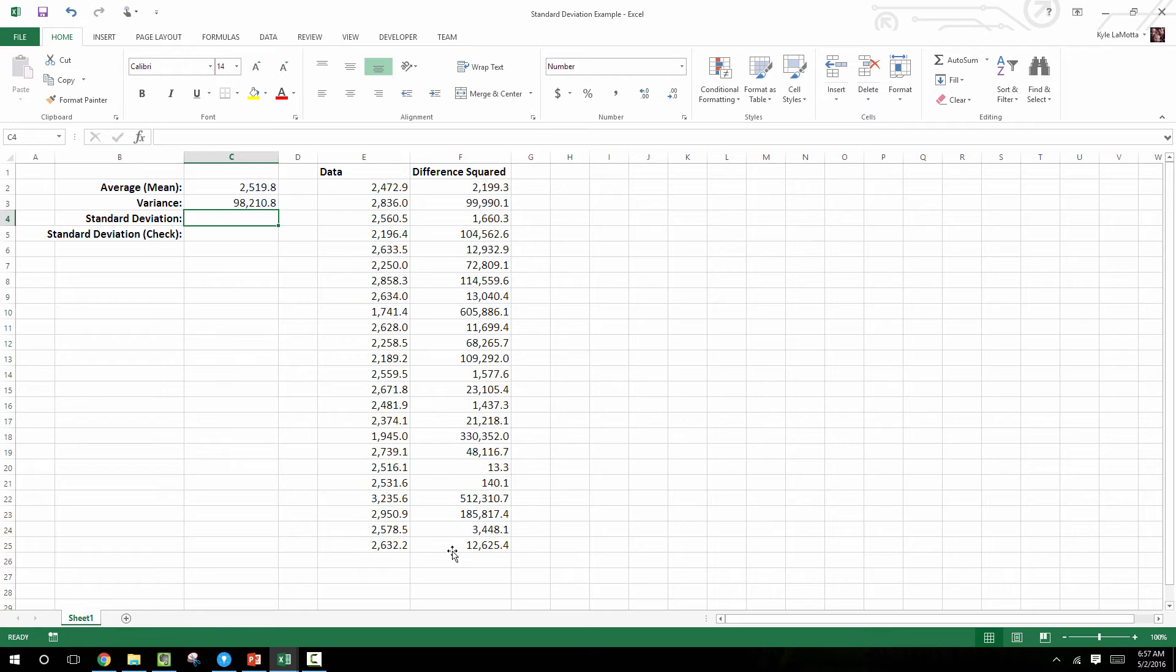And next we'll calculate the variance by taking the average of all of these difference squared values. And finally, we'll simply calculate the standard deviation by taking the square root of the variance. And we can check the standard deviation by using the built-in Excel function, which is STDEV.P for this entire data set. And we can see that these numbers are exactly the same.